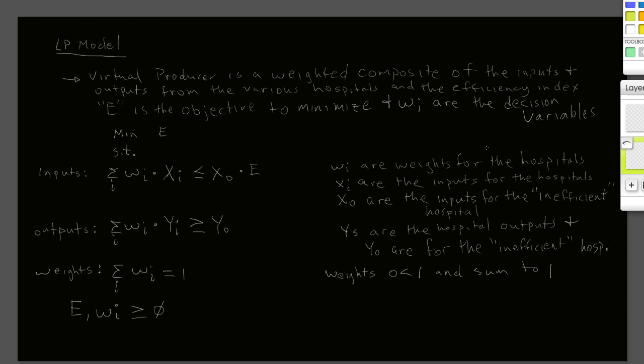We'll use Excel to find the answer. In the linear programming model, the virtual producer is a weighted composite of all of the inputs and outputs used by the various hospitals. We're going to get an efficiency index E, which is the objective we want to minimize. The WIs are the weights that we will use as decision variables. This is one of those unusual cases where E is not only the objective but also a decision variable, kind of like in a finance problem.